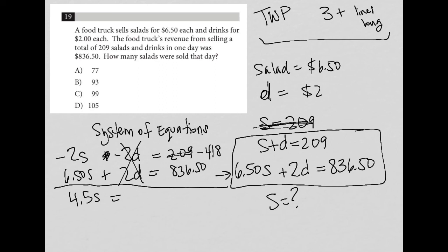I think I did that wrong. Negative 418 plus 836.5 equals, that is equal to $418.50. And then we're going to divide both sides by 4.5 to figure out what S is. So that divided by 4.5 is 93. So S is equal to 93.